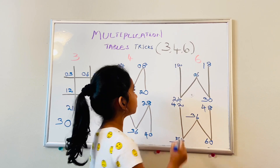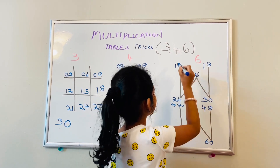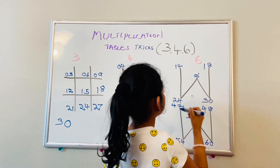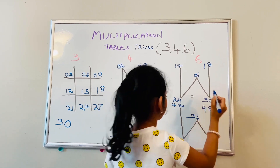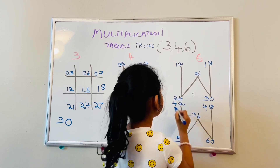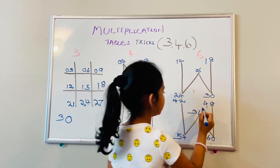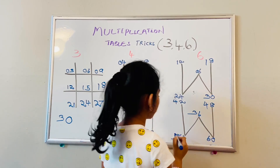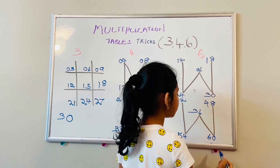Six ones are six. Six twos are twelve. Six threes are eighteen. Six fours are twenty-four. Six fives are thirty. Six sixes are thirty-six. Six sevens are forty-two. Six eights are forty-eight. Six nines are fifty-four. Six tens are sixty.